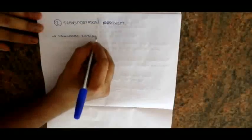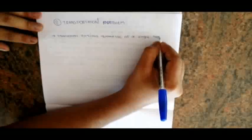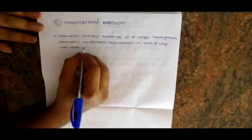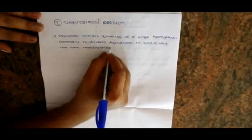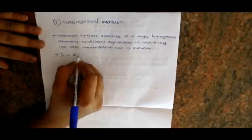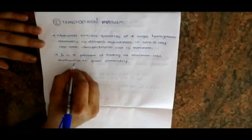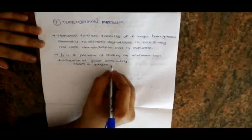The second technique is the transportation problem. It involves transporting various quantities of a single homogeneous commodity to different destinations in such a way that the total transportation cost is minimum. It is a problem of finding the minimum cost distribution of a given commodity from a group of supply centers to a group of receiving center destinations.